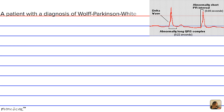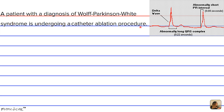A patient with a diagnosis of Wolff-Parkinson-White Syndrome is undergoing a catheter ablation procedure. There's a lot of information loaded in this question stem. The first is Wolff-Parkinson-White Syndrome, and whenever someone has this syndrome, there's a characteristic delta wave seen in this person's EKG, and there's also an abnormally short PR interval as pictured here.